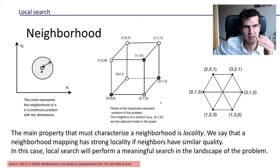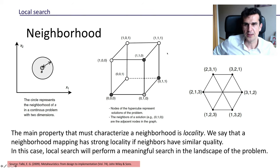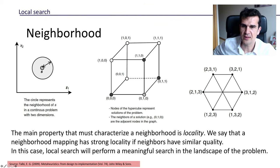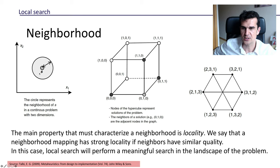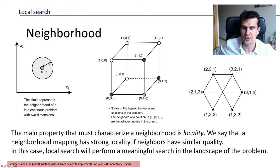A crucial point in any local search algorithm is how you define the neighborhood. We'll see a few examples and then discuss what properties a neighborhood must have. For instance, if we're representing solutions with two continuous variables x1 and x2, the neighborhood of a solution S could be all solutions within a certain Euclidean distance — which defines a circle in this space.